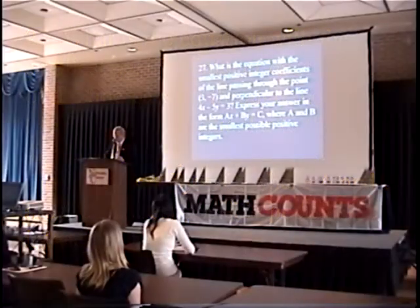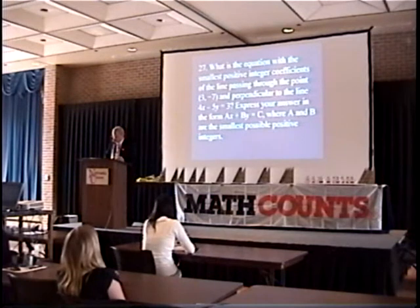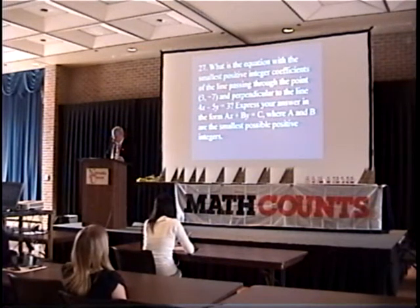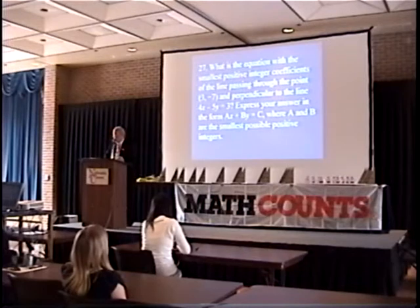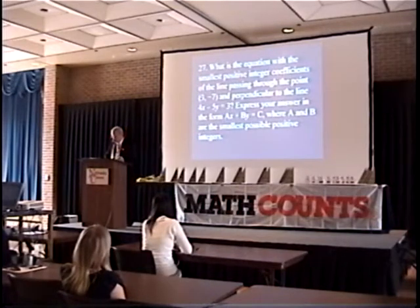What is the equation with the smallest positive integer coefficients of the line passing through the point (3, -7) and perpendicular to the line 4x minus 5y equals 3? Express your answer in the form ax plus by equals c, where a and b are the smallest possible integers.